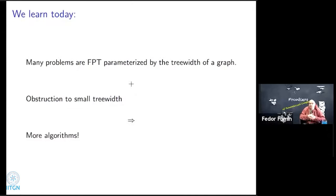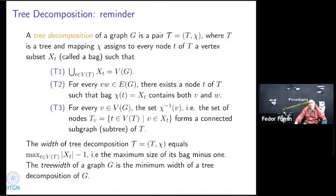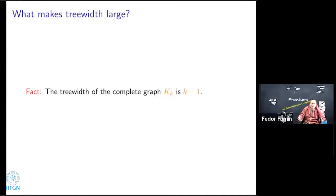Just a reminder about what tree decomposition is. A tree decomposition of a graph is a pair (T, X) where T is a tree and every node t of T is assigned a vertex subset X(t). This decomposition satisfies three properties: every vertex should be in some bag; every edge should be in some bag; and for any node, all bags containing it form a subtree in T. The width of a tree decomposition is the maximum bag size, and the treewidth of a graph is the minimum taken over all tree decompositions.